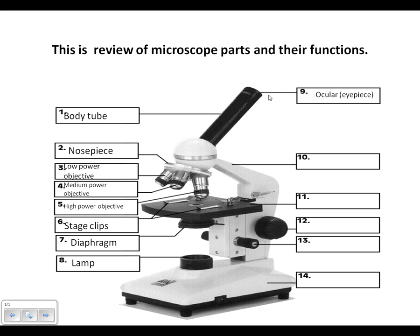Part nine is your ocular, also known as your eyepiece, and it magnifies ten times. Part ten is the arm of the microscope, and you carry the microscope with one of your hands using the arm. Part eleven, this black thing here, is your stage, and the stage supports your slide or your specimen that you're trying to observe.